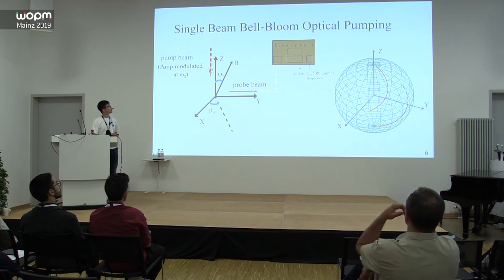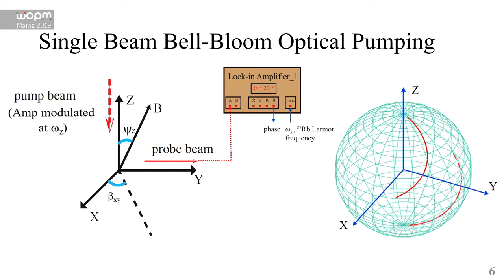For a single beam Bell-Bloom optical pumping, the pump beam is modulated at the Larmor frequency of the atoms. For an arbitrary direction of the magnetic field, which is defined by angles θ and β, we can extract several information from the probe beam using lock-in amplifiers.